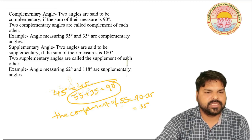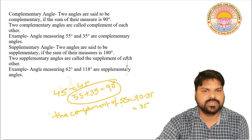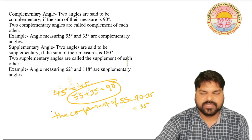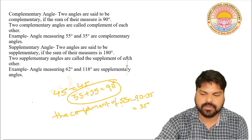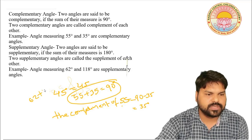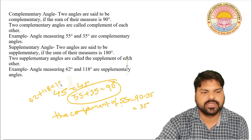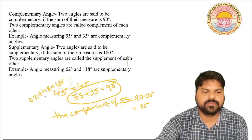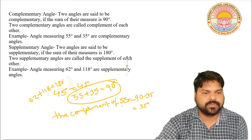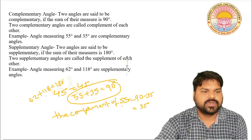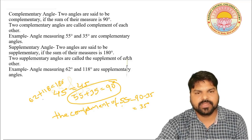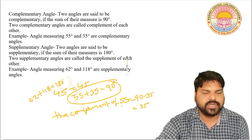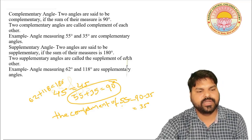What is a supplementary angle? Two angles are said to be supplementary if the sum of their measures is 180 degrees. For example, 62 degrees and 118 degrees: if we add them, the sum is 180 degrees. So 62 and 118 are supplementary. The supplement of 62 is 118, and the supplement of 118 is 62.